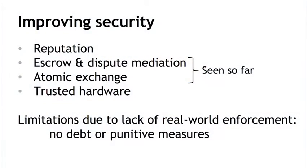Now let's think about another aspect of all the protocols we've seen: security. We started out by saying atomicity is a very important way to achieve security, but it's not the only one. Here are some ways of improving security. We've seen two: escrow with dispute mediation, and atomic exchange, which completely automates the process. But there are others.